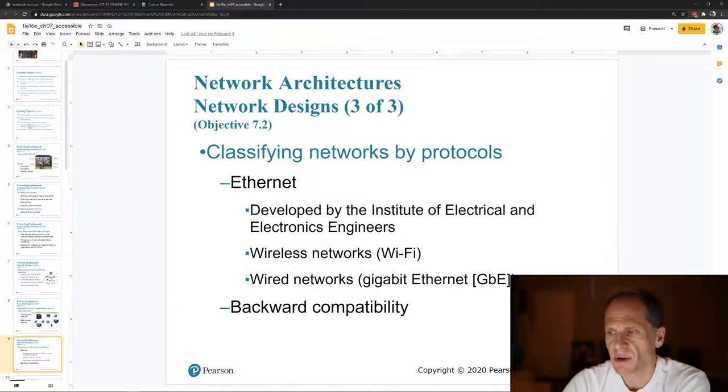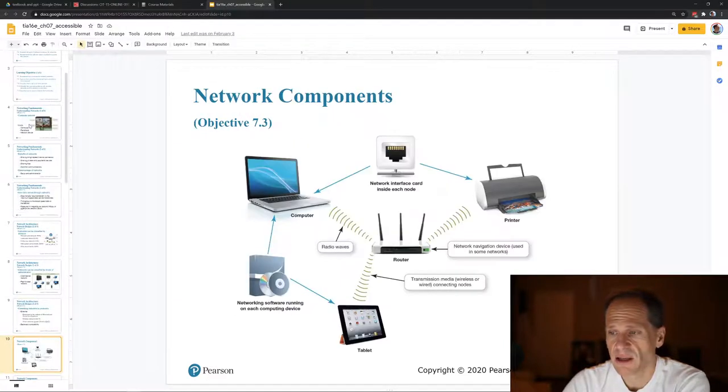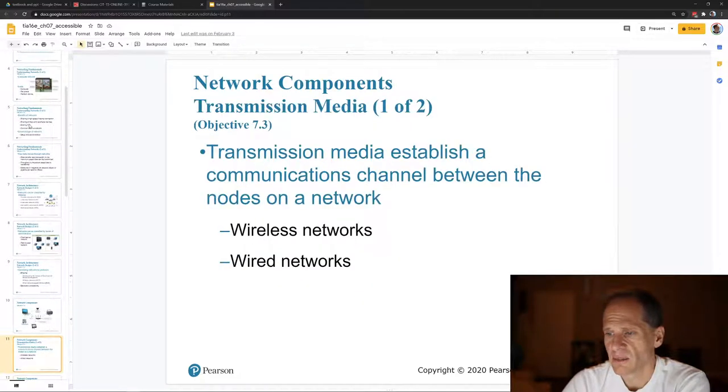And then classifying networks by protocols. So protocols are rules of communication. Ethernet, Wi-Fi, different protocols, TCP, IP, and different network components for wireless routers, right? So there's a router. I don't know most of the stuff we've gone over.